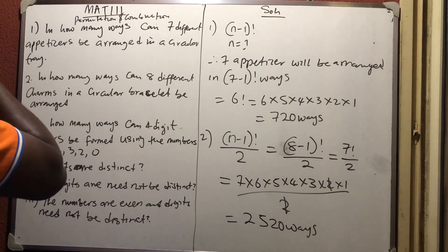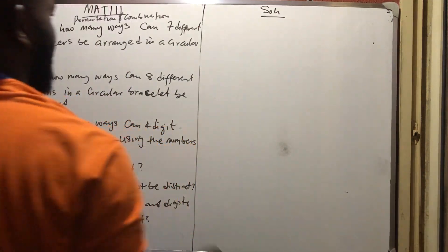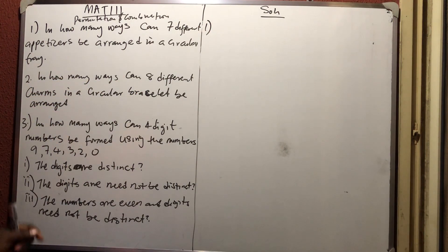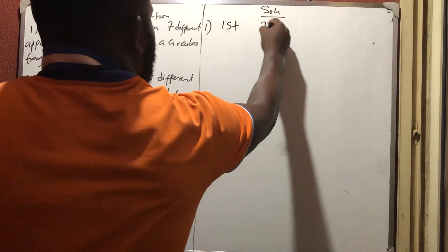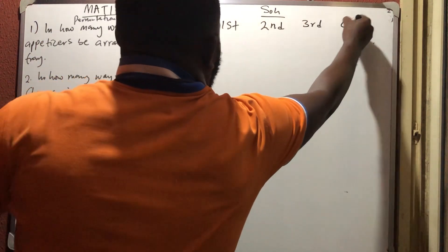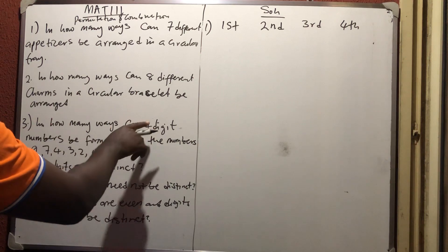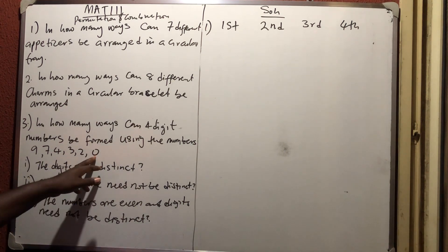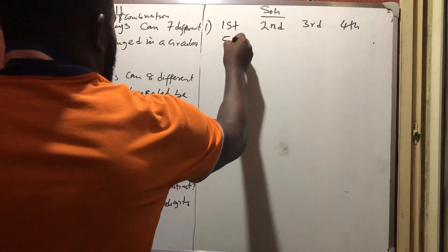Number three: in how many ways can a four-digit number be formed? Label the positions: first digit, second digit, third digit, fourth digit. Zero cannot start a number, so the first digit can be any of 1, 2, 3, 4, or 5 — that gives us 5 choices. The digits are distinct, meaning no repetition.